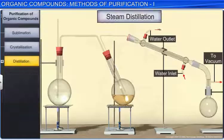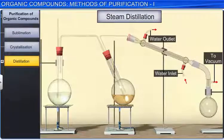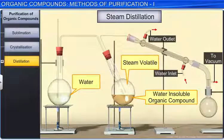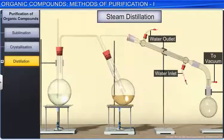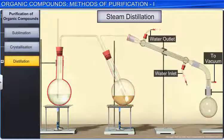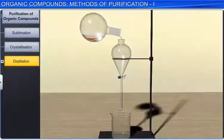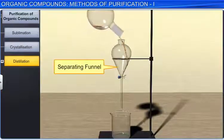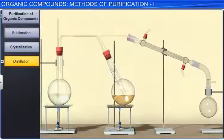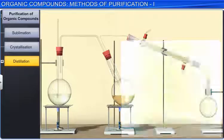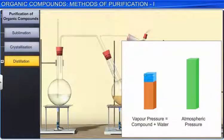Another distillation process, steam distillation, is used to separate substances that are immiscible with water and steam volatile — that is, substances that get evaporated when steam is passed through them. In this process, the liquid to be distilled is kept in a heated flask and steam from the steam generator is passed through it. The mixture of the steam and the compound is condensed and collected. The compound is separated from water using a separating funnel. In steam distillation, the liquid boils when the sum of the vapor pressures due to the organic liquid and due to water becomes equal to the atmospheric pressure.